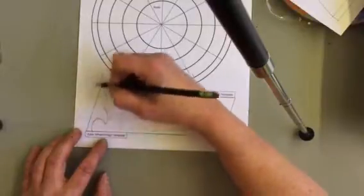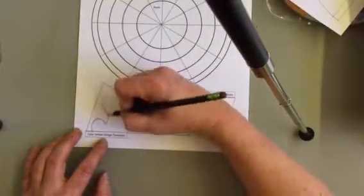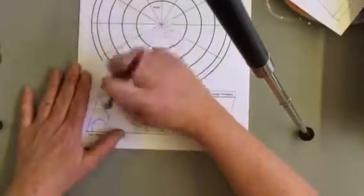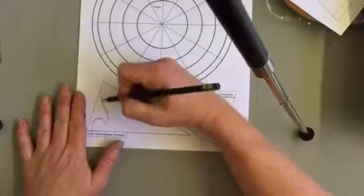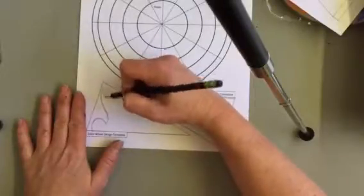Start out with really trying to bring those shapes up and filling in that space nicely. Draw light so that you can erase and change things as you go along.